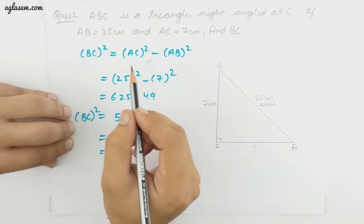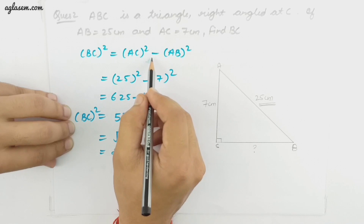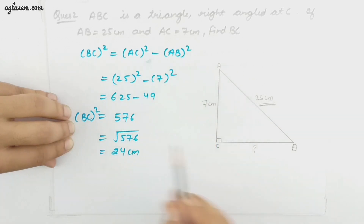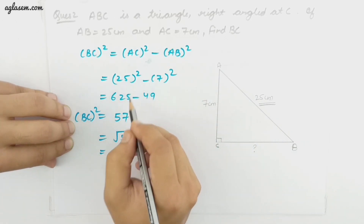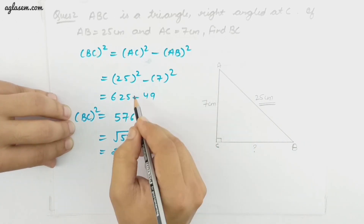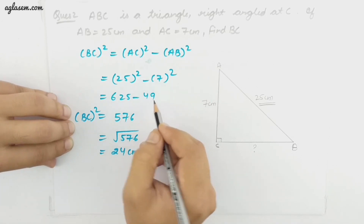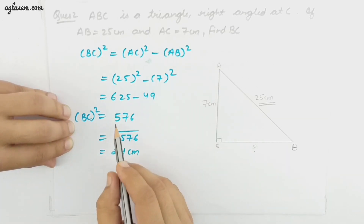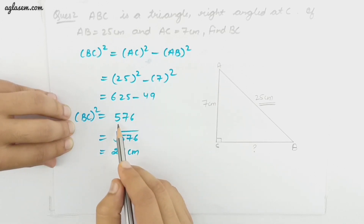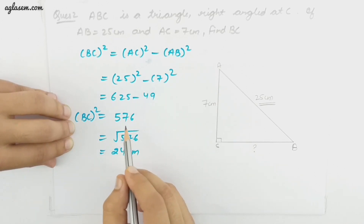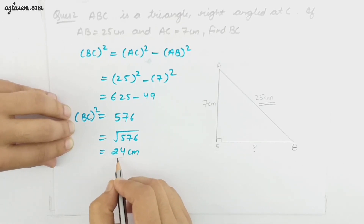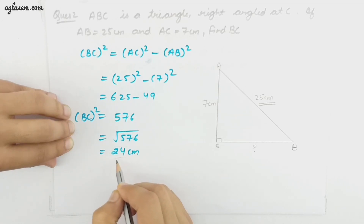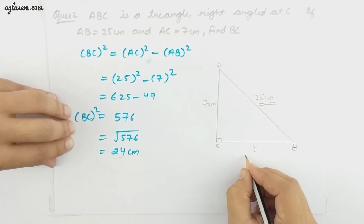BC square equals AC square minus AB square. AC is 25 and AB is 7. The square of 25 is 625 and the square of 7 is 49. So BC square equals 625 minus 49 equals 576, which is the square of 24. So BC equals 24 centimeter.